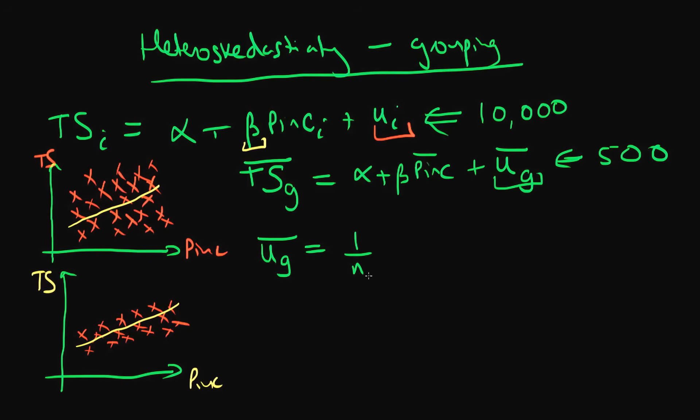So it's U_1g plus U_2g plus all the way up to the last individual U_ng_g, and we weight this sum by the number of individuals which are in that group.